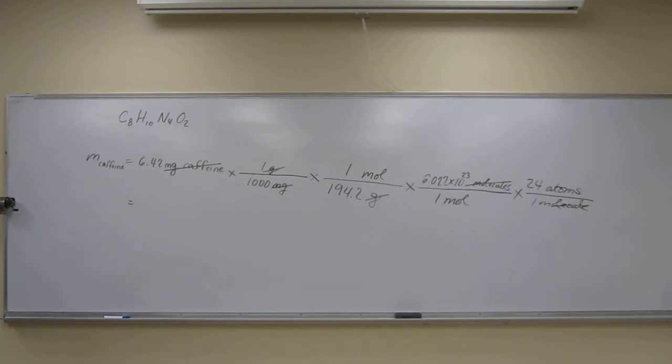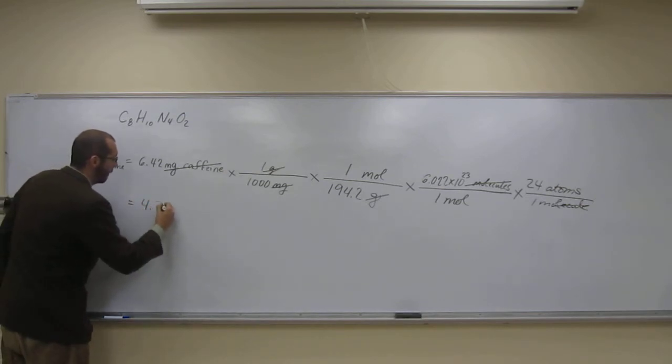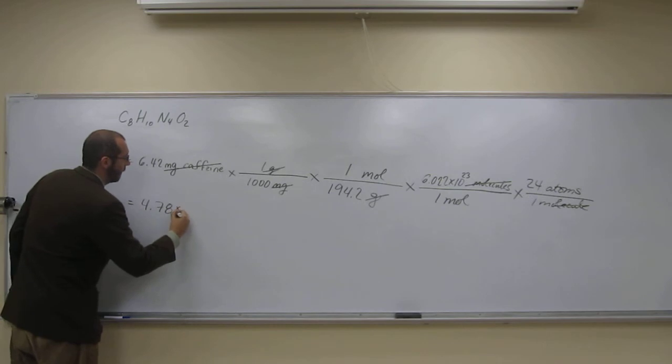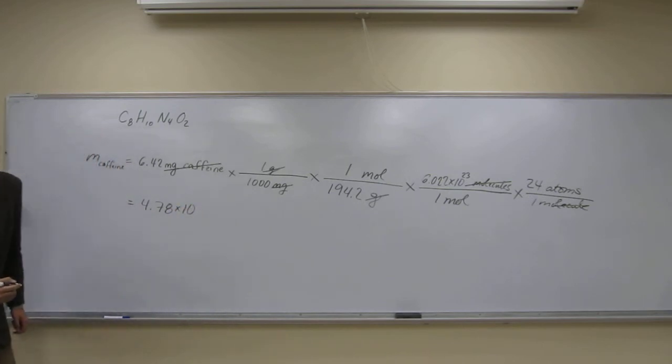So now it's just putting in your calculator, multiply, divide. So 6.42 divided by 1,000, divide that number by 194.2, multiply that number by 6.022 times 10 to the 23rd, then multiply that number finally by 24. And this is to how many sig figs? 3, so it's going to be 4.78 times 10 to the 20th.